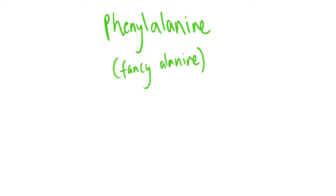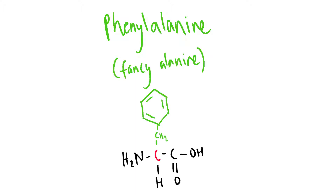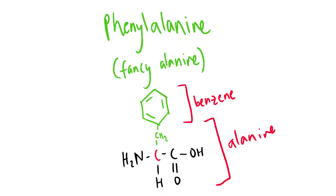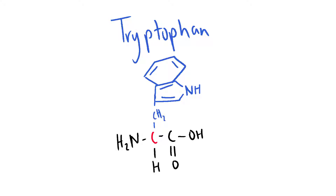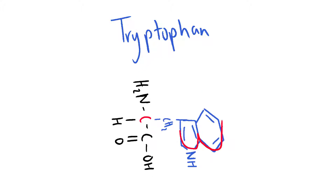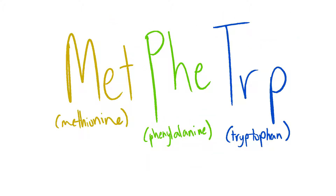Phenylalanine sounds a lot like fancy alanine, so it just wears an earring — a.k.a. a benzene ring attached to the alanine side chain. Phenylalanine starts with an F sound, so its single letter abbreviation is F. You can remember that it's not P since proline already stole P. With a little stretch of the imagination, tryptophan looks like a fan, which is how you remember the structure. But it also kind of looks like a W if you turn it sideways, so the single letter abbreviation is W. The three letter abbreviations are part of the mnemonic: MET for methionine, PHE for phenylalanine, and TRP for tryptophan.